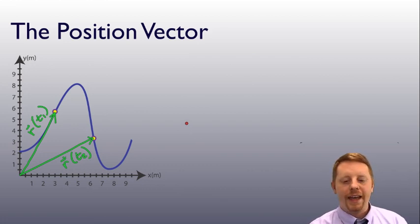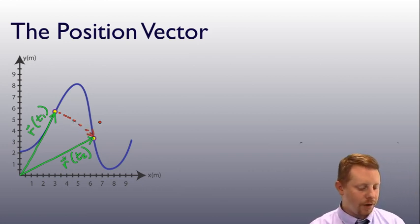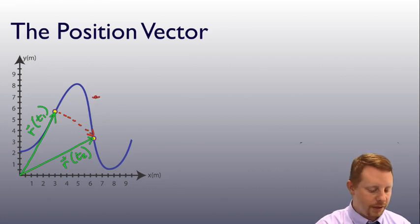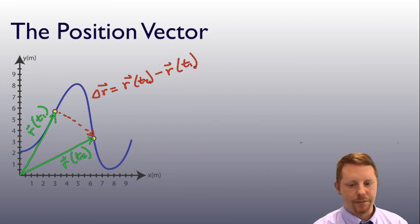Now, when we have these two, we can define the difference between these two from the position vector at time T1 to the position vector at time T2 as displacement. Delta position vector, which is going to be the position vector at time T2 minus the position vector at time T1.